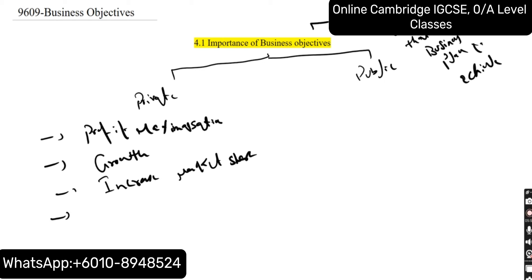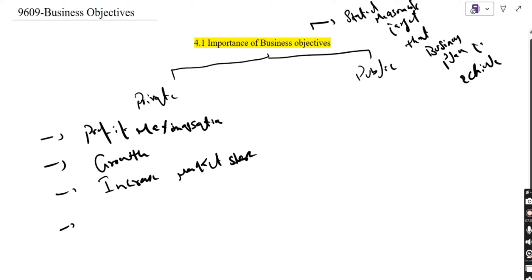For private business objectives, the obvious one is profit maximization. You might also open different franchises in different cities to increase market share. The question is how much profit you want to earn, so you can also write it as profit satisficing — this means achieving enough profit to keep the owner satisfied.